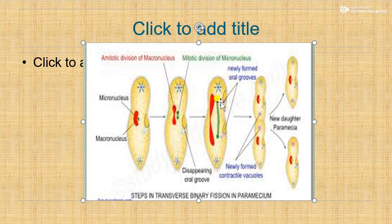A transverse cytoplasmic furrow or constriction forms which deepens gradually, dividing into two equal daughter paramecia. Of these two daughter paramecia, the anterior one is called the proter and the posterior one is called the opisthe.